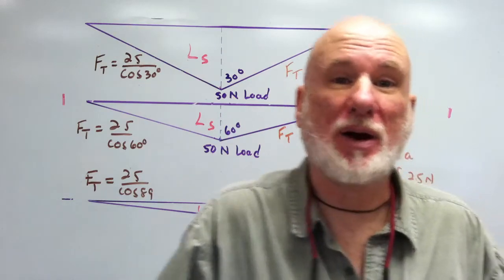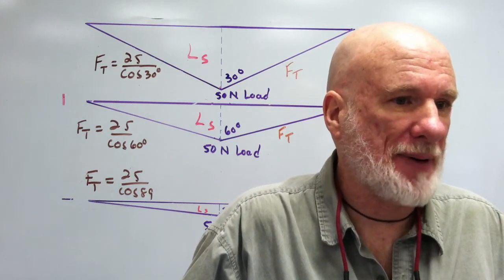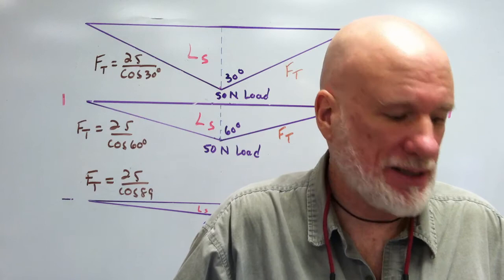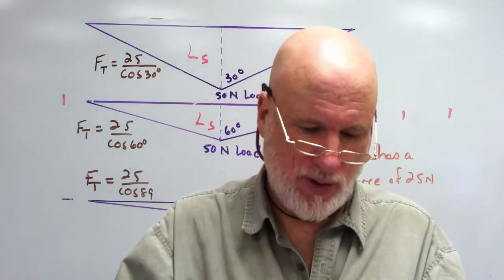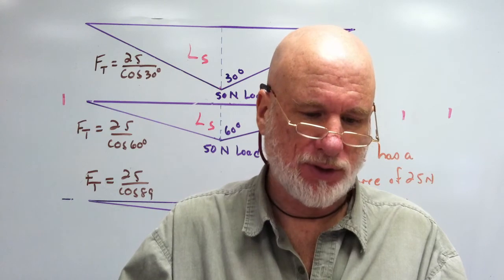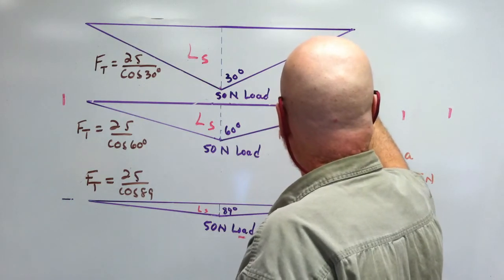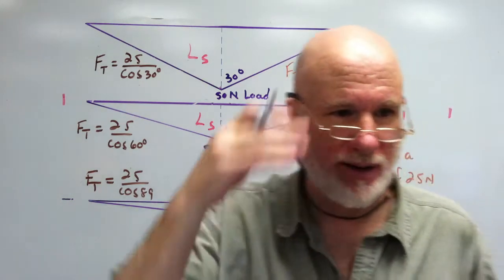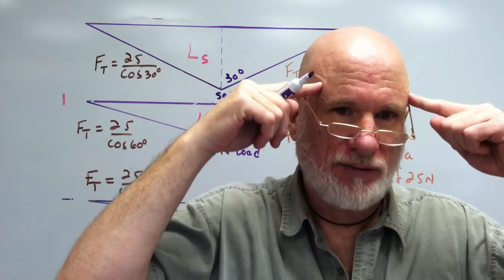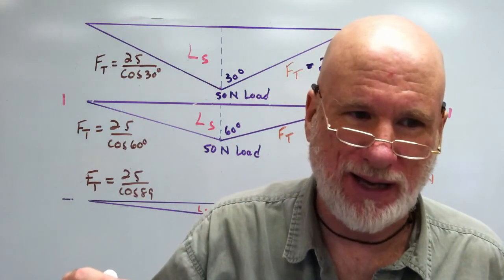I have two working for me — I can go to the moon twice; I might be able to go to Mars. Many people say I'm from Mars. So, 25 divided by cosine 30 equals 29 Newtons. That's interesting because if each line is 29, there's a total of 58 Newtons holding up that 50 Newton object. Not a very effective way of doing business.